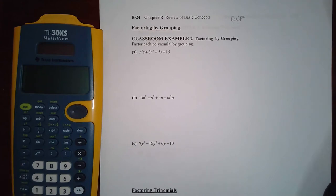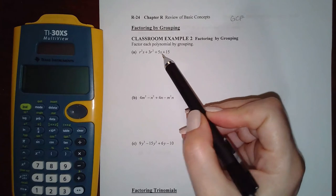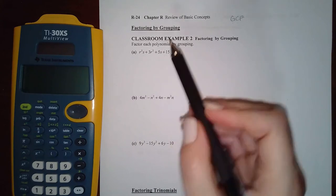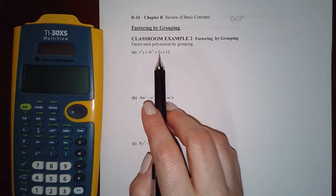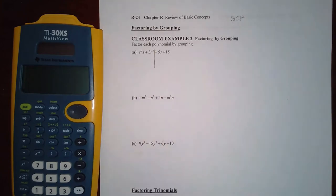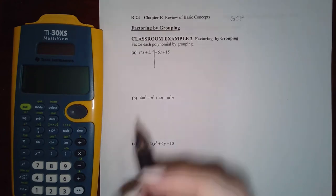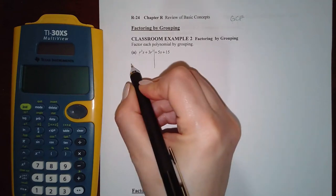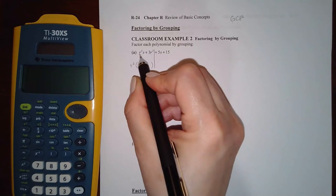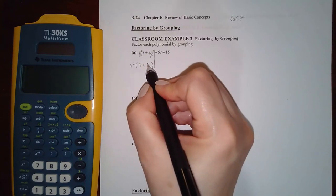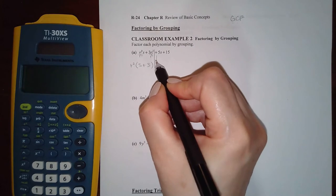For this example I've got four terms, so I'm going to cut the polynomial in half to create two groups. When you cut it in half, remember that the sign belongs to the number after it — this plus sign belongs to that five. So when I draw my line to cut this in half, I have to keep that plus sign with the five. Then these two terms both have an R squared in common, so if I factor out that GCF and divide both terms by R squared, I end up with S plus three.